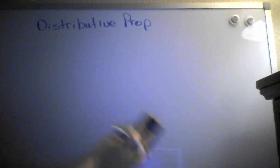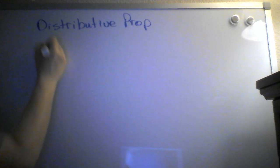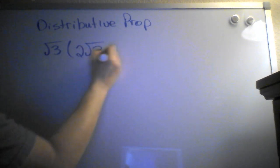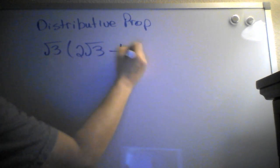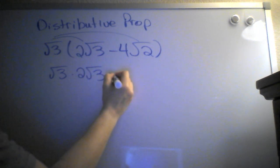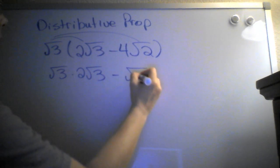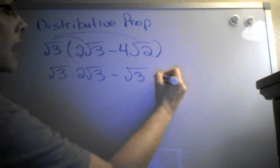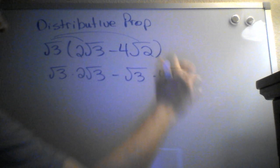Let's try one more. Let's say we have radical 3 times the quantity 2 radical 3 minus 4 radical 2. So again, we're going to distribute the radical 3. So we have radical 3 times 2 radical 3, and then minus radical 3 times 4 radical 2.